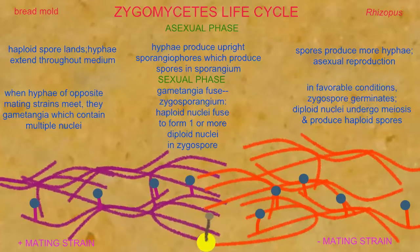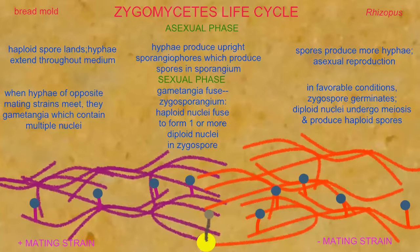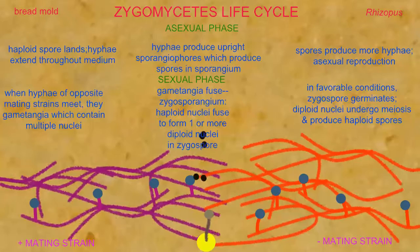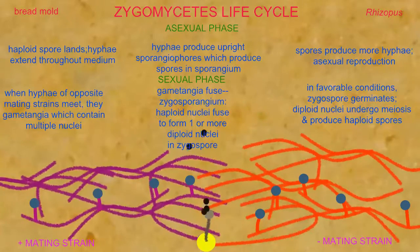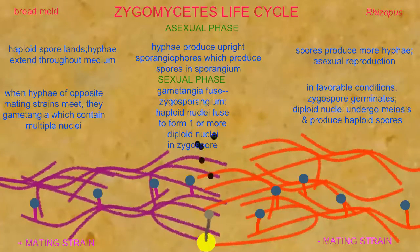The zygospore can remain dormant. If it encounters favorable conditions, then it will germinate. In germination, meiosis occurs so that the diploid nuclei produce haploid nuclei, which then divide by mitosis, producing the haploid spores which can then begin the life cycle again.